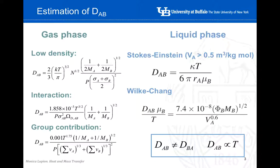We studied different empirical equations that help us determine the values of diffusivity. In the case of the gas phase, we saw basically three different ways of calculating or estimating this coefficient. For the liquid phase, we also saw two different methodologies: one is Stokes-Einstein and the second one is Wilke-Chang. In general, it is important to highlight that the diffusivity of A through B is not the same as the diffusivity of B through A for liquids, while in gases these two coefficients are the same.